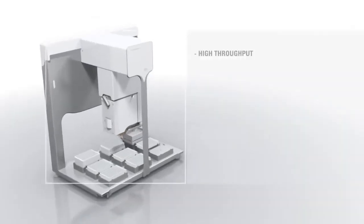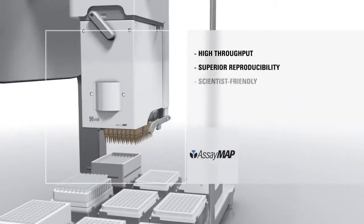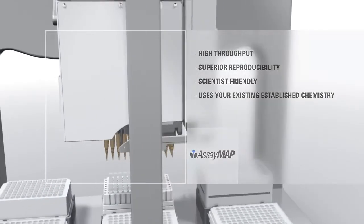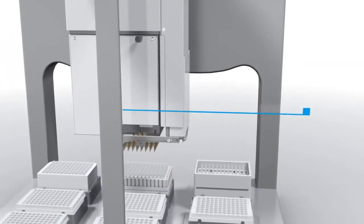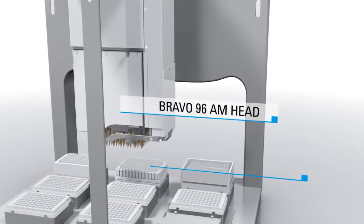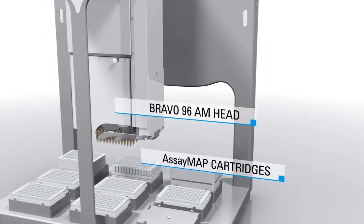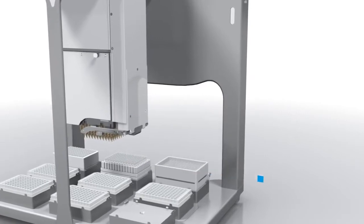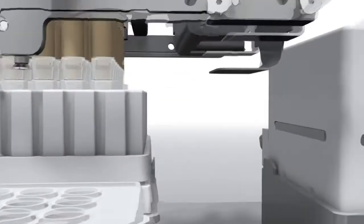This open automated platform leverages the high-throughput, best-in-class automated liquid handling of the Agilent Bravo 96AM with the AssayMap Microchromatography technology to enable true chromatographic separation with precision flow control. You can use established purification methods so you can spend less time developing and validating assays and more time generating critical data.